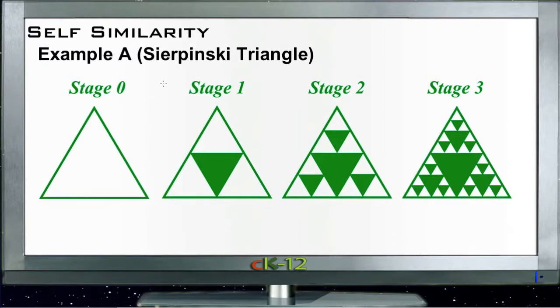The first example here is called the Sierpinski triangle. The Sierpinski triangle is a figure that is self-similar because you can see that we start with a single triangle and then what we do is draw, we connect the midpoints of that triangle.